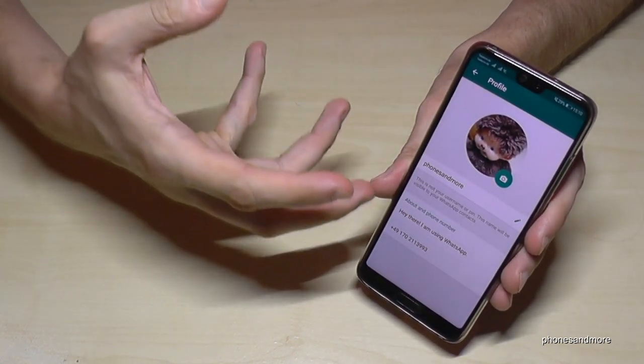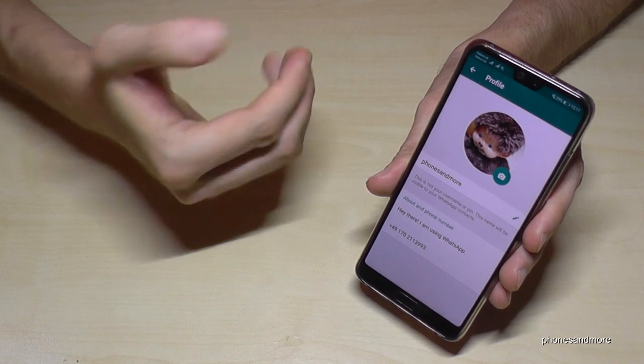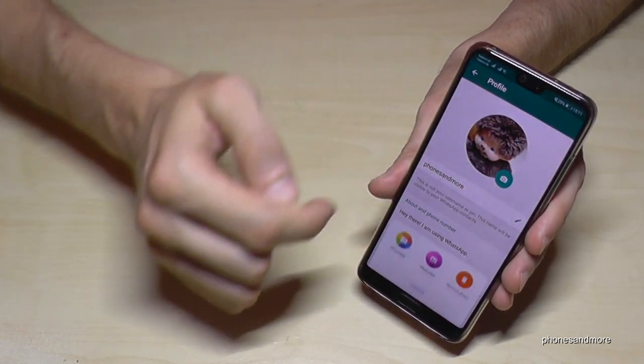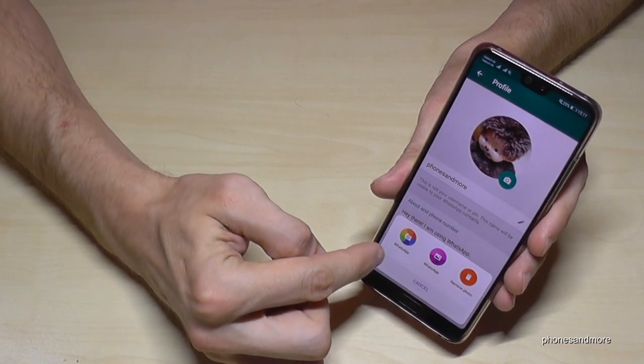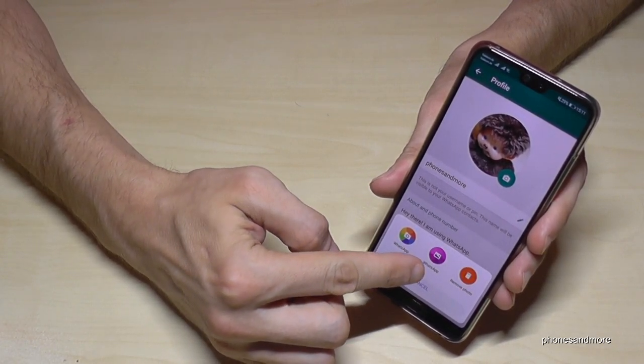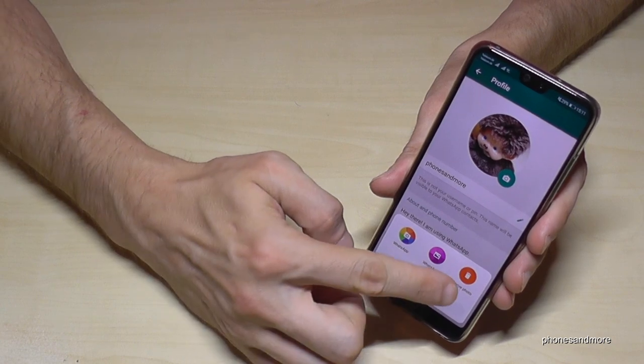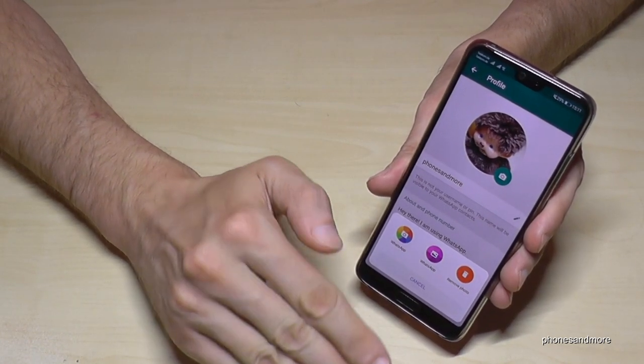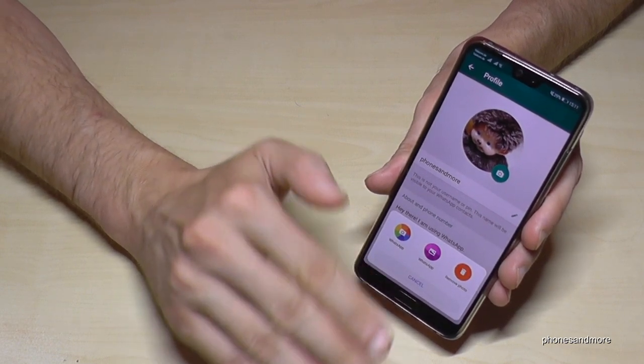If you want to edit or change the picture, go to the camera symbol again. You'll have the option to take a picture with the camera, choose one from the gallery, or remove your profile picture if you don't want one anymore.